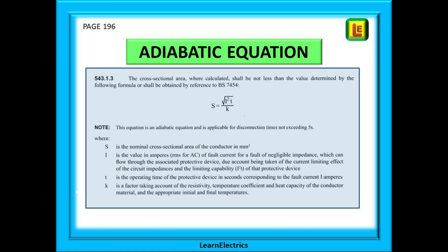We can begin by looking at the adiabatic equation as found on page 196 of the wiring regulations book. The page is shown here along with the formula and a description of the different symbols used. You must get to know this page and how to use the formula.